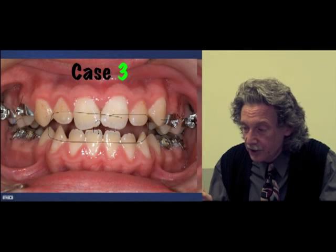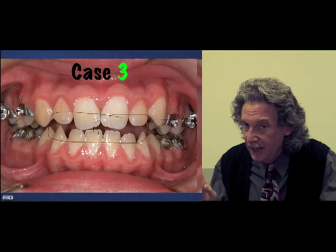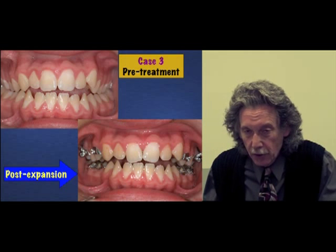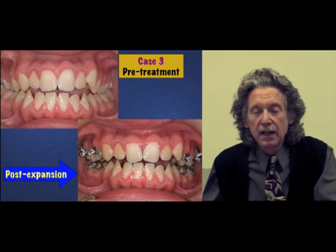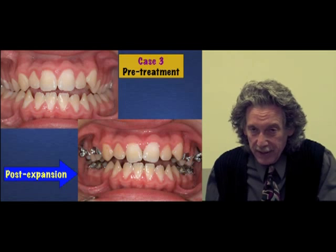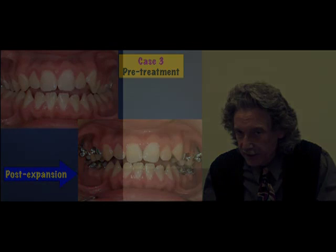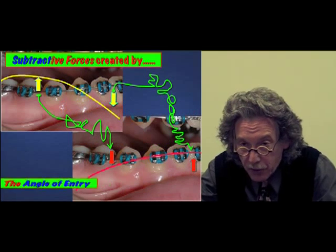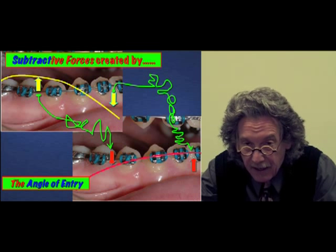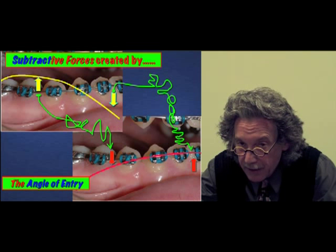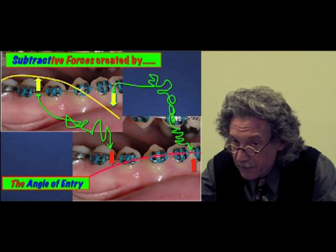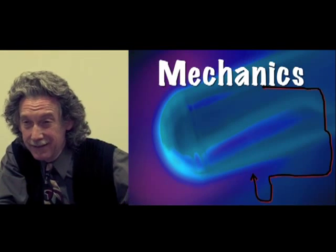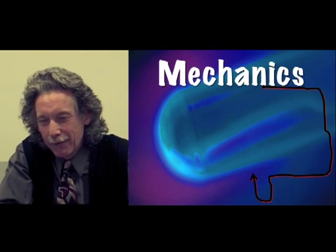What are the chances, as you watch the image, that during expansion the bite will actually close down at the centrals? Note the posterior expansion — the expansion has occurred, has been quite successful, and the bite has actually closed down at the central. Subtractive forces are being created by the angle of wire entry. This looks very similar to the gable bend. The angle of wire entry — a bit of a more advanced concept for sure.